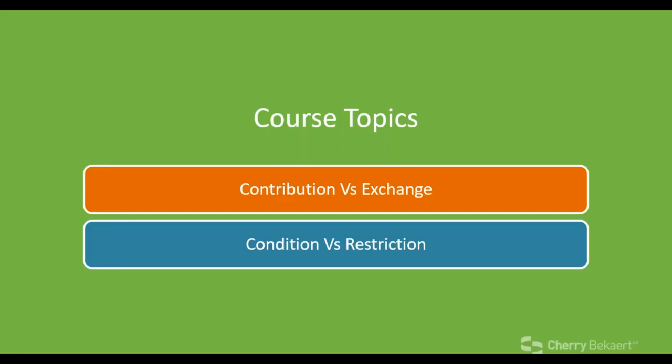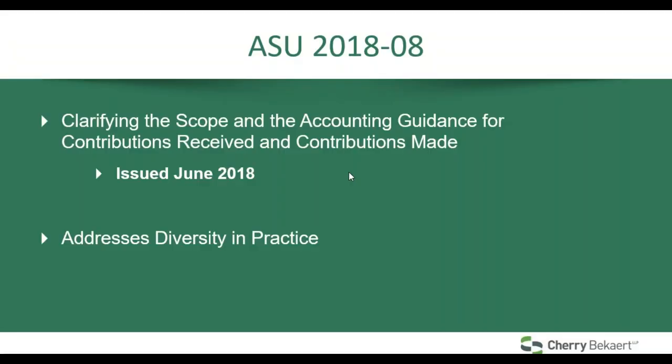The two areas we're going to cover are the two real areas addressed in ASU 2018-08, which was just issued a couple of weeks ago. ASU 2018-08 is on clarifying the scope and accounting for contributions received and made. It addresses two big areas: first, contributions versus exchange transactions — when do you know if something is a contribution versus an exchange transaction? This is very important as Topic 606 for revenue recognition comes into play. Second, if you are in the contribution guidance, there's been a change in the difference between a condition and a restriction that may have a material impact on your financial statements.